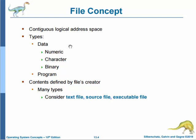Commonly, files represent programs in both source and object forms, and also data. Data files can be numeric, alphabetic, alphanumeric, or binary. Files may be freeform such as a text file, or may be formatted. In general, a file is a sequence of bits, bytes, lines, or records, the meaning of which is defined by the file's creator and user. The concept of a file is extremely general because files are the method users and applications use to store and retrieve data and, because they are so general purpose, their use has stretched beyond its original confines.